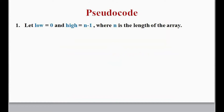Pseudocode actually represents an algorithm written in simple English — it is not specific to any programming language, but you can convert it to a program using any language. The first step is taking two variables, low and high, and setting them to certain values: low is set to 0 and high is set to n minus 1.